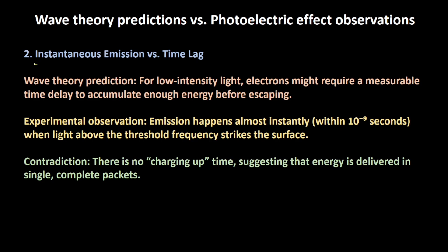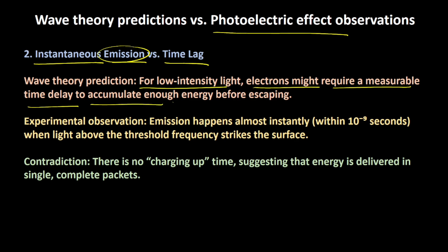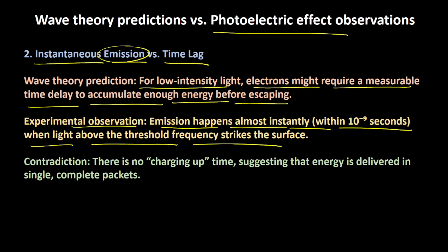The second contradiction is instantaneous emission versus the time lag. In the photoelectric experiments, as soon as light of a certain frequency falls on the metal, instantaneously the electron emission starts. But as per the wave theory, the electron might take some time to absorb the energy, creating a time lag. The wave theory predicts that for low intensity light, electrons might require a measurable time delay to accumulate enough energy before escaping. But the experimental observation suggests that emission happens almost instantaneously — within 10 raised to the power minus 9 seconds — when light above the threshold frequency strikes the surface. The electrons do not require a charging-up time; there is no time delay during photoelectric emission.